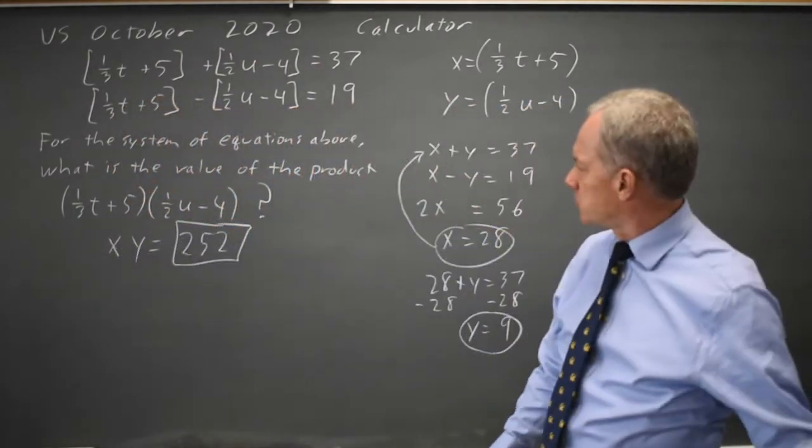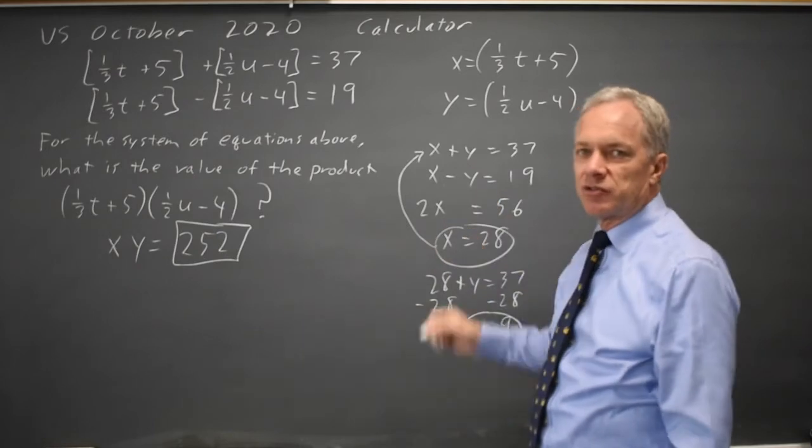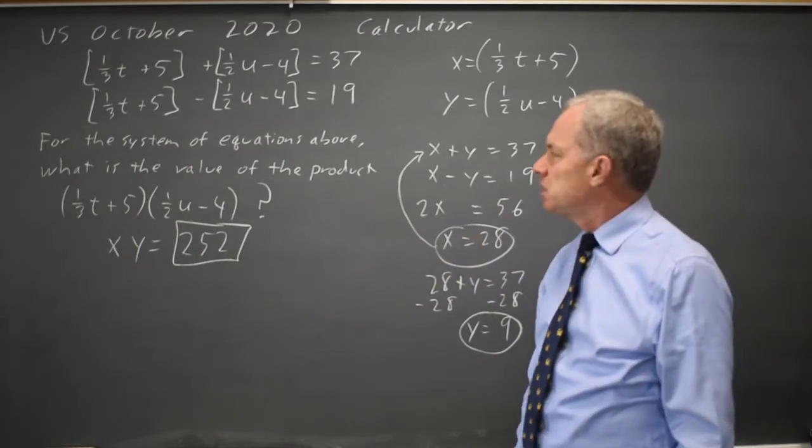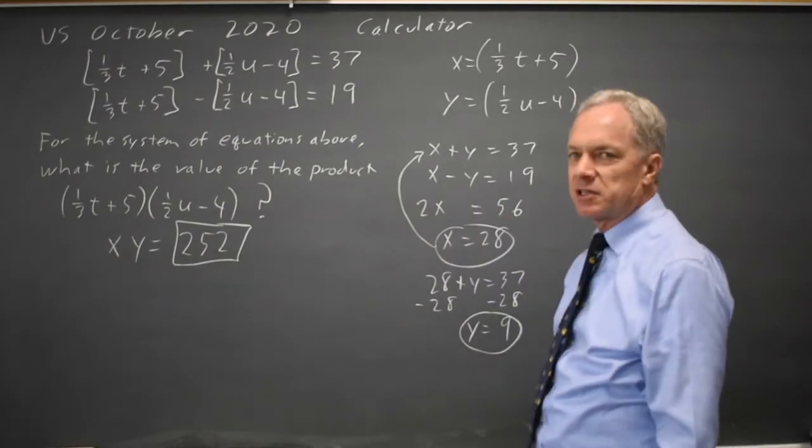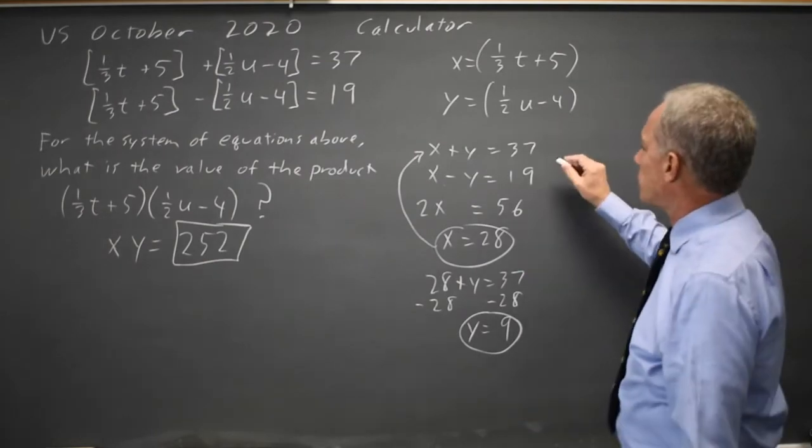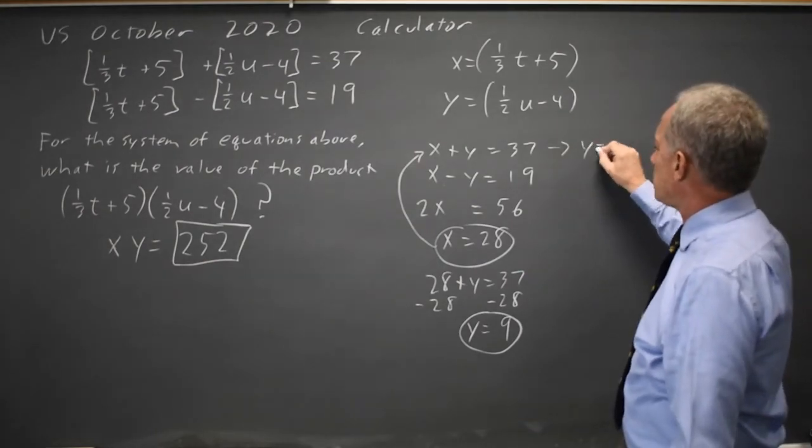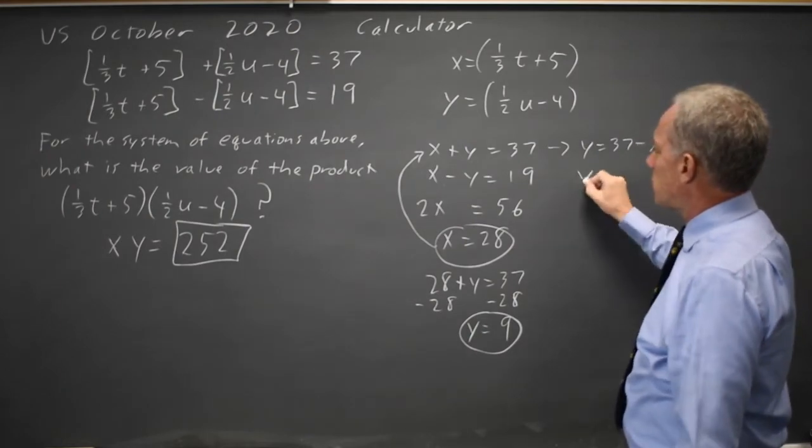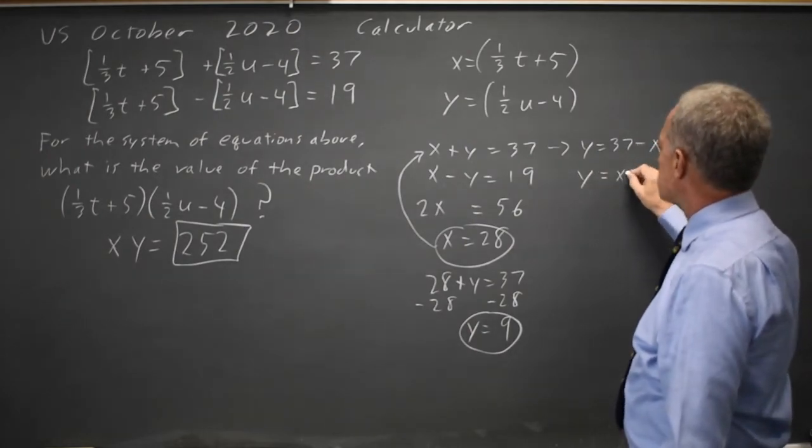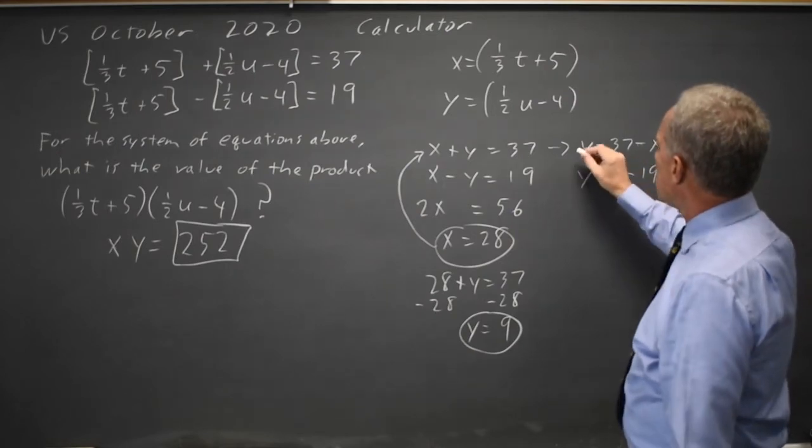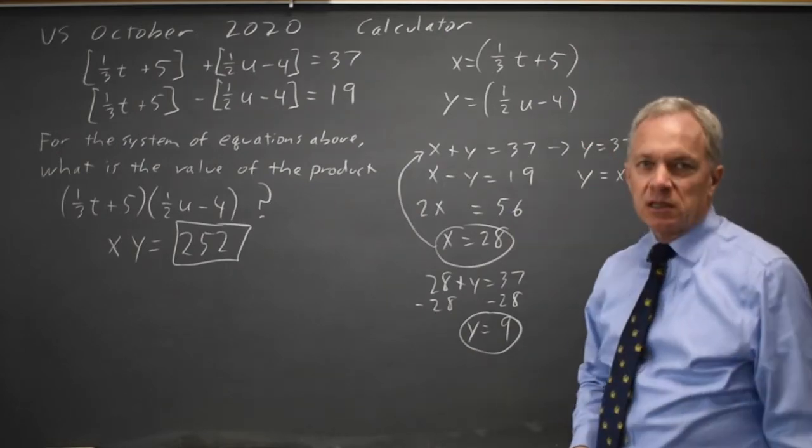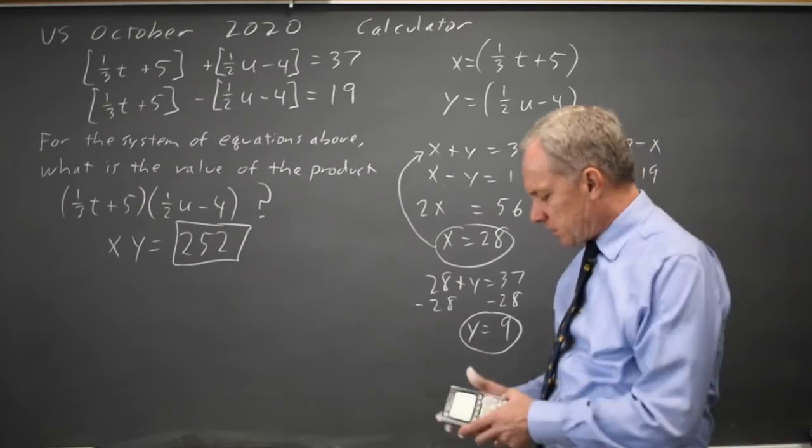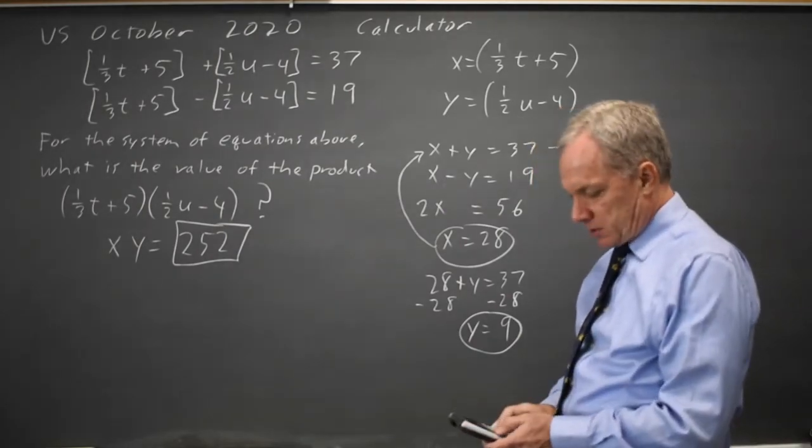Once I've done this substitution, I can solve in a variety of other ways. Since this is a graphing calculator question, I can solve both equations for y. y equals 37 minus x, and y equals x minus 19. If I graph these, I can find the point of intersection, and I'll do that.